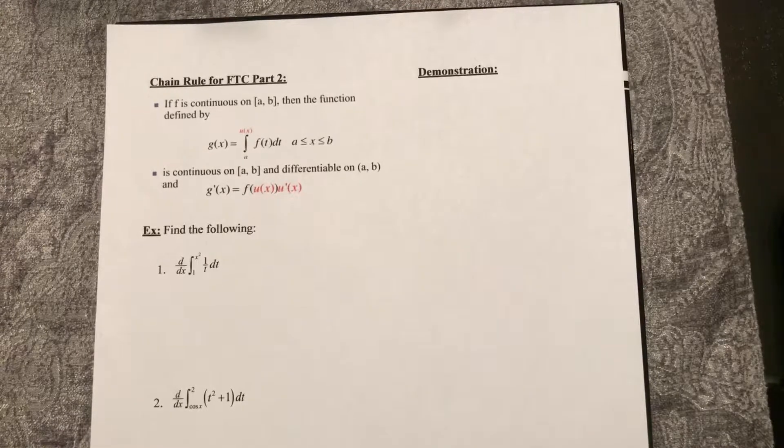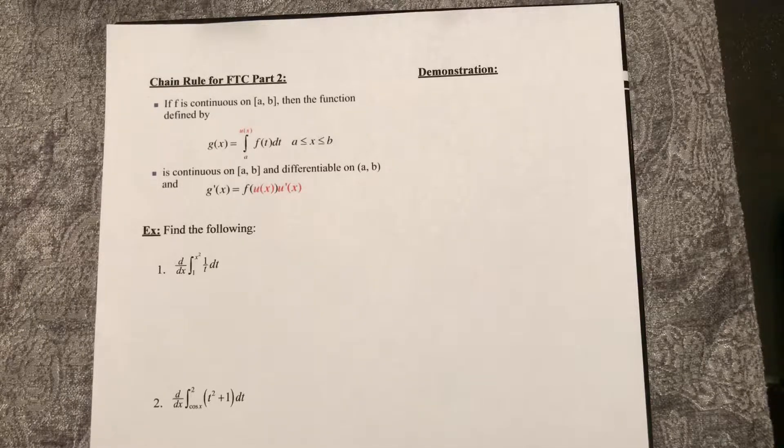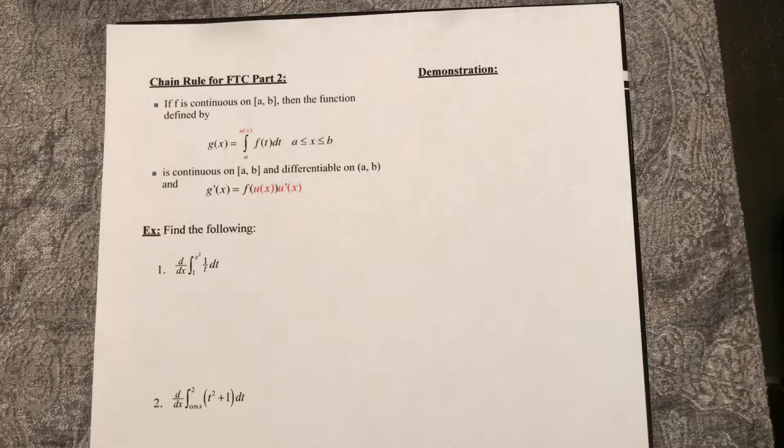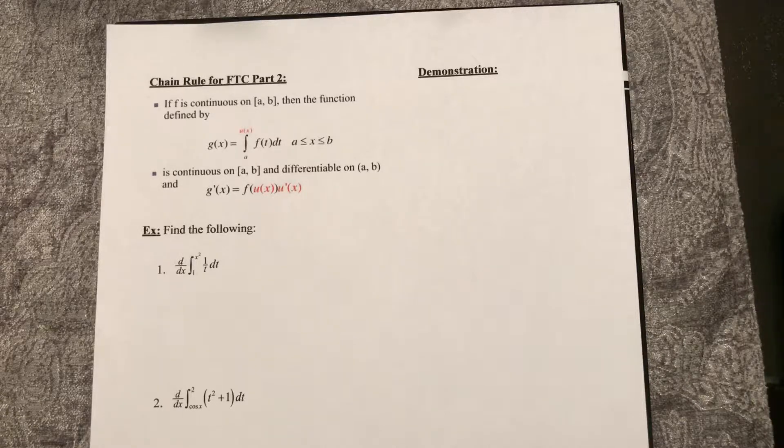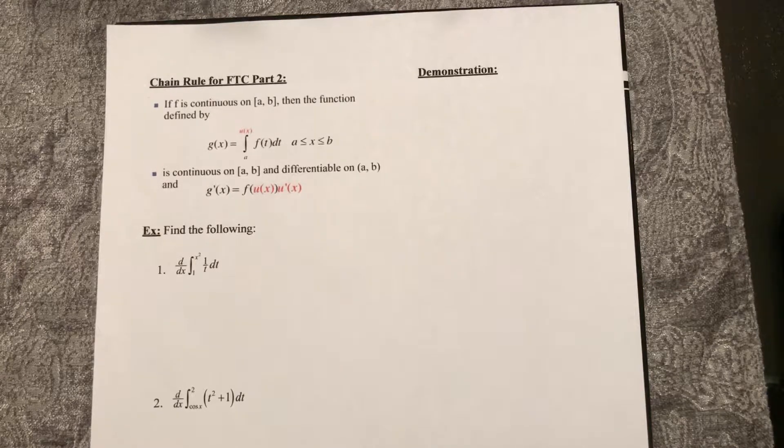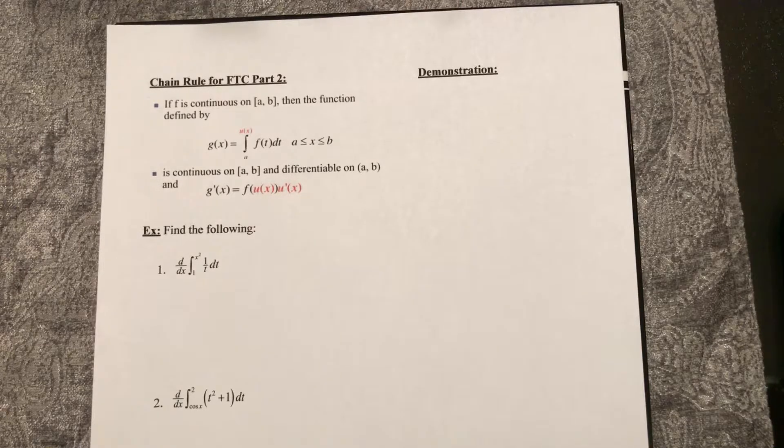So if f is continuous on a closed interval, and the function g is defined to be this function from a to some u of x of f of t dt, then we can apply chain rule when we find the derivative. So let's do a quick demonstration of why that is true.